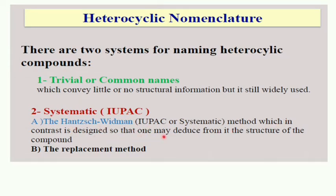The systematic or IUPAC name uses the Hantzsch-Widman method, which is designed so that one may deduce the structure of the compound from its name. Based upon the structure of the compound, the IUPAC name — International Union for Pure and Applied Chemistry — is given using the replacement method.